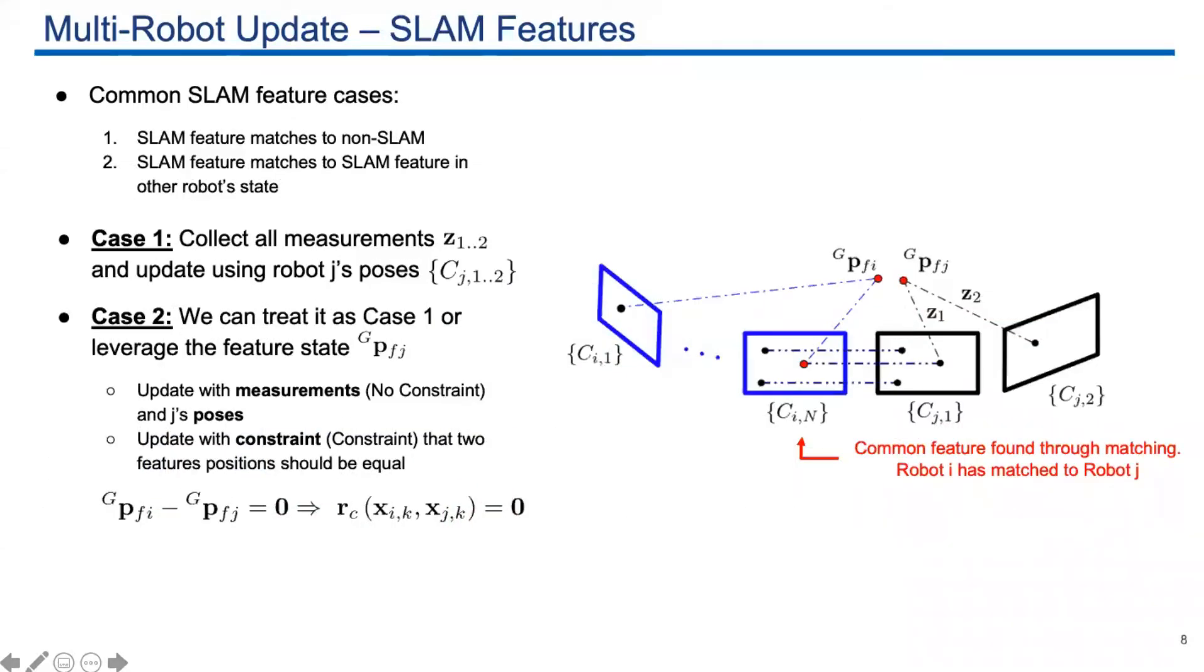Next, we talk about the common SLAM feature. Each robot's common SLAM feature can match to another SLAM feature or SLAM feature in another robot. For case one, we use robot j's pose to update robot i. For case two, we have two options. The first option, we can do something similar to case one, use robot j's pose to update robot i. Another option is that, as shown in this figure, each robot has an estimate of the feature. These two estimated positions are supposed to be the same, so we can enforce the same feature constraint. Note that this is only a 3x1 vector, so it's much more efficient than the case we use robot j's pose to update.